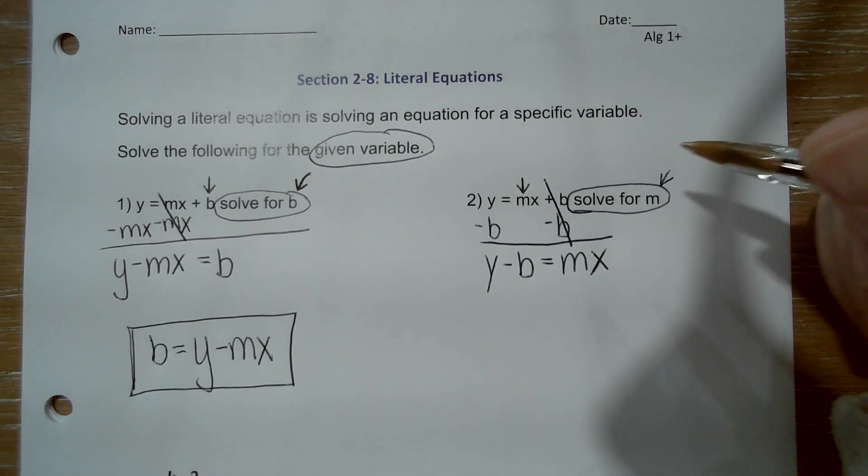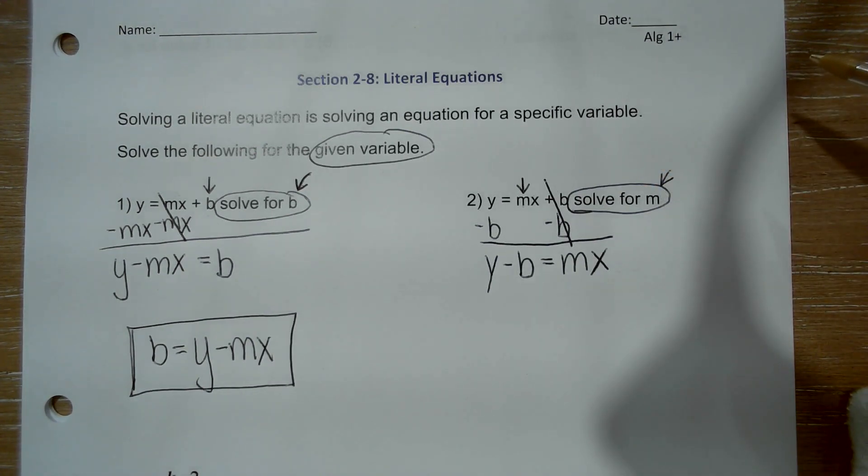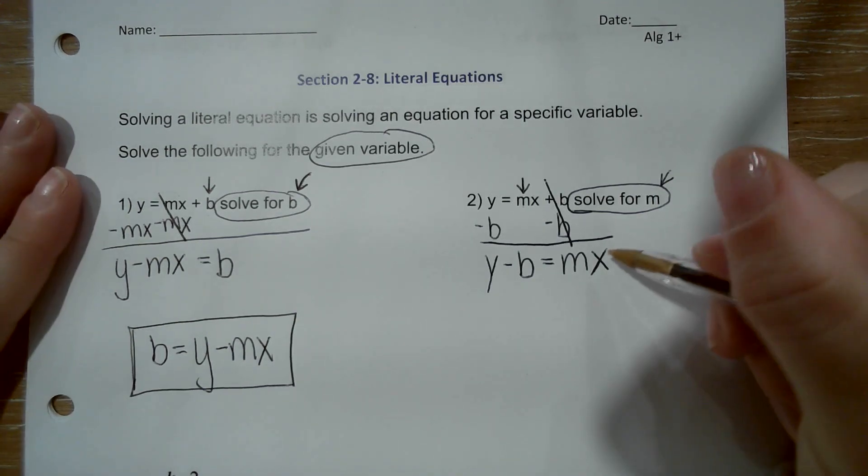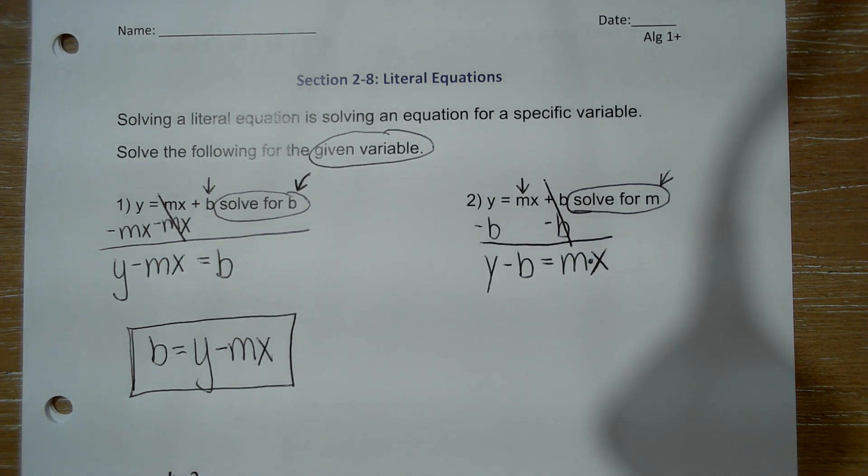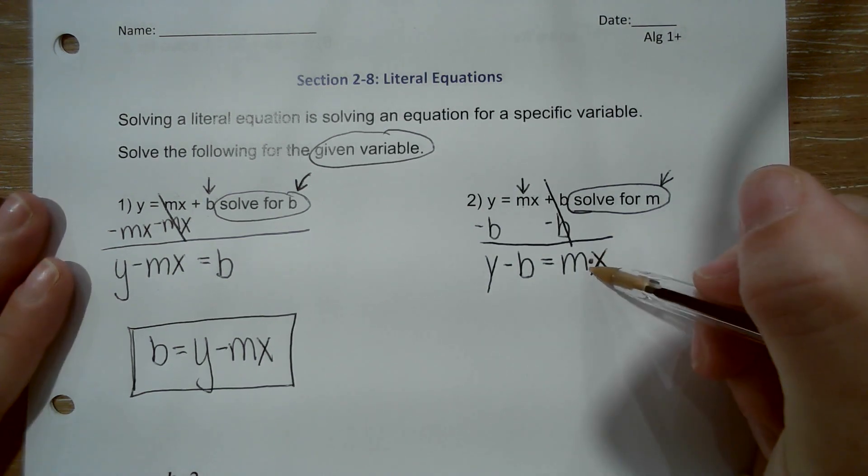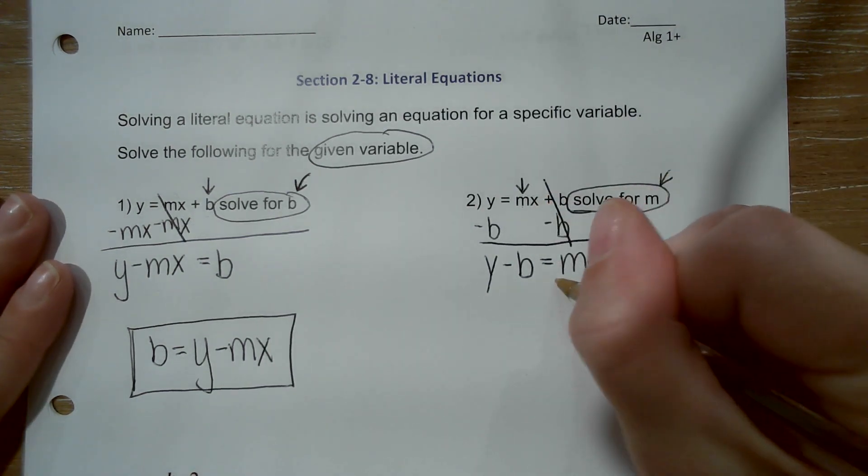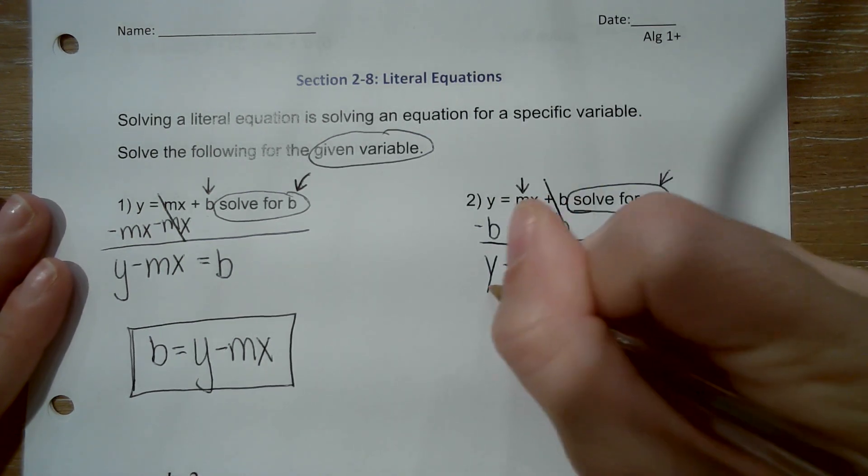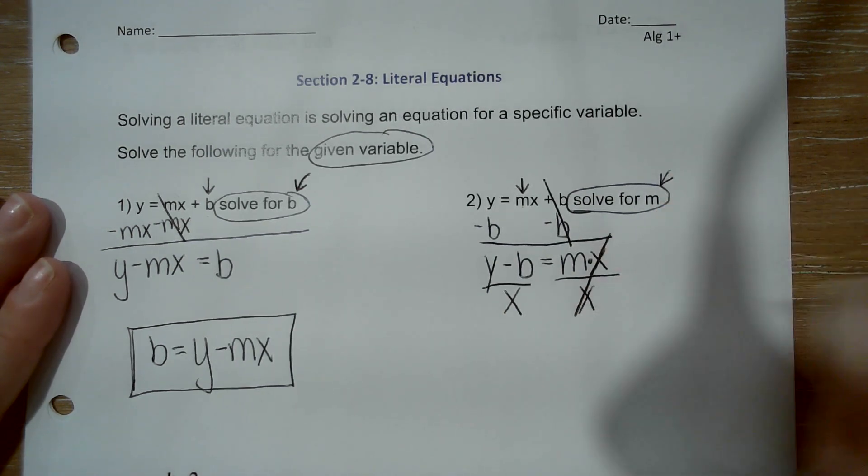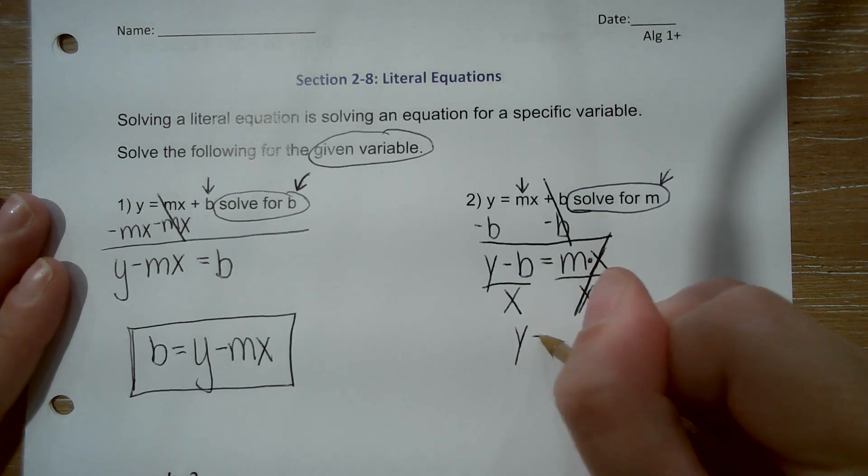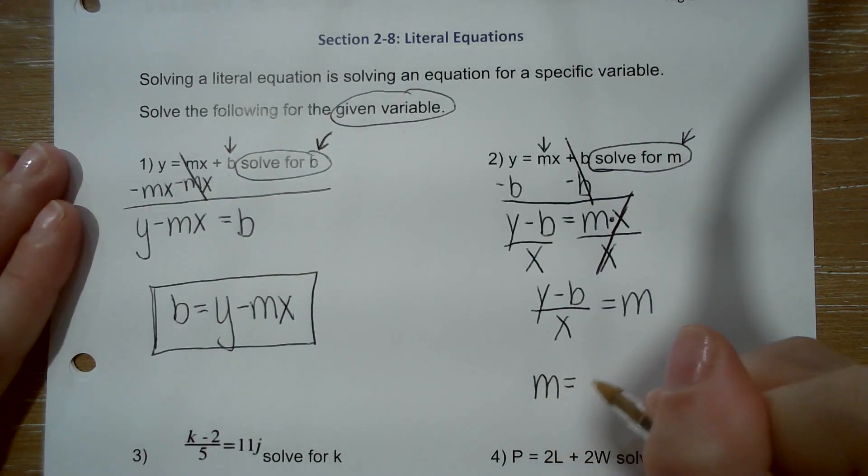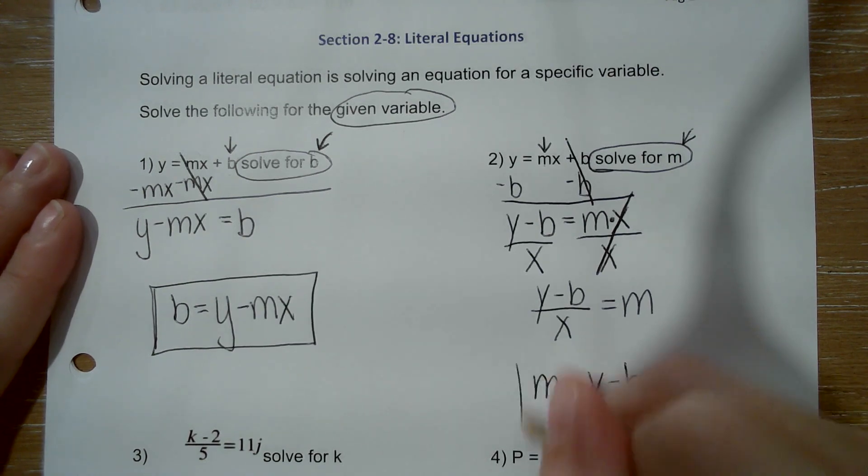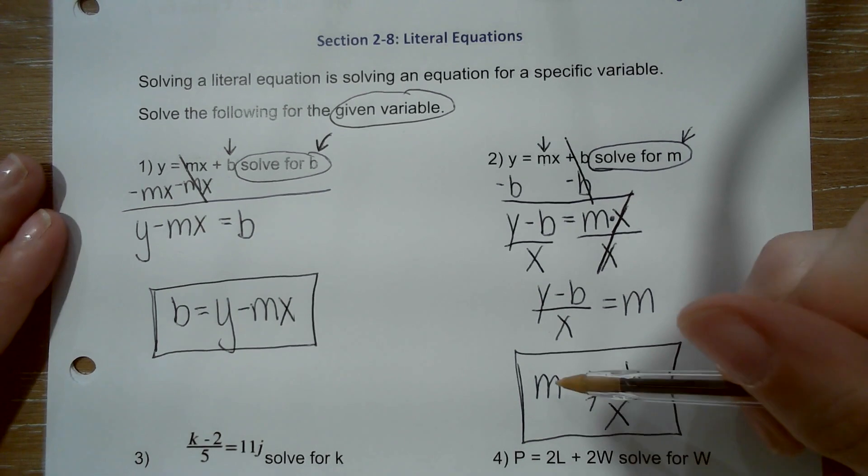So to get m alone, I ask myself, and always ask yourselves these questions: What operation is happening now? Well, right now it's m times x. So that makes it a little easier for me to identify my inverse operation because I know the inverse of times or multiplication is division. So if I want to separate the m and the x and move the x away, I am going to divide by that x. That eliminates the x on this side and leaves me with y minus b over x equals m. So for my final answer I'm going to write it like this.